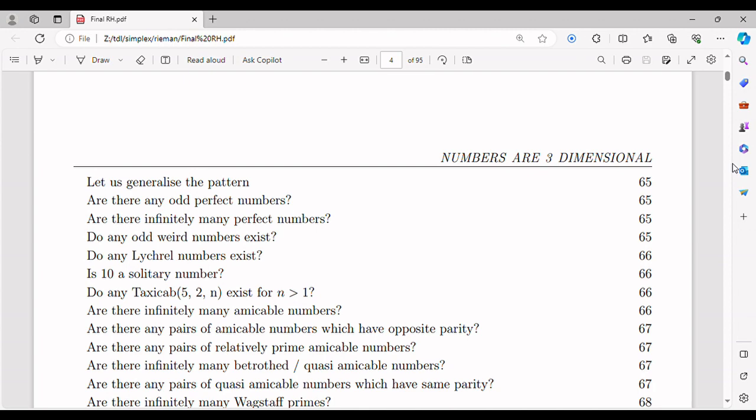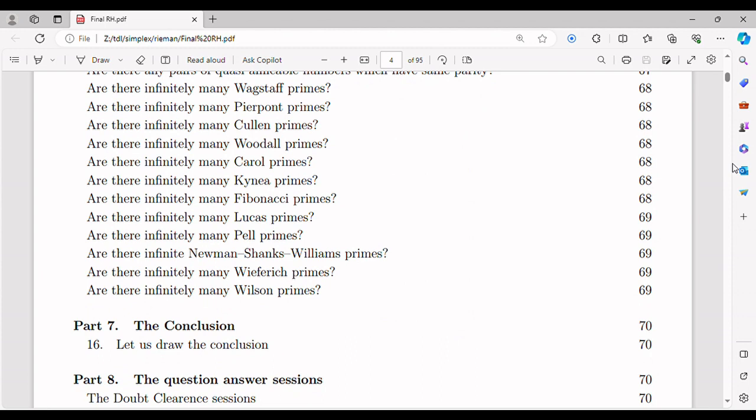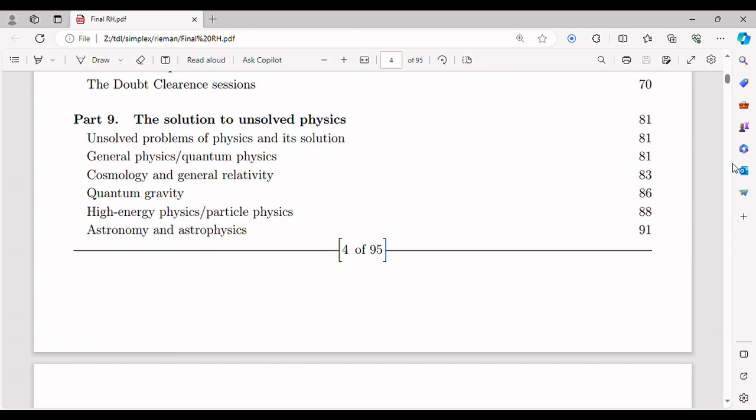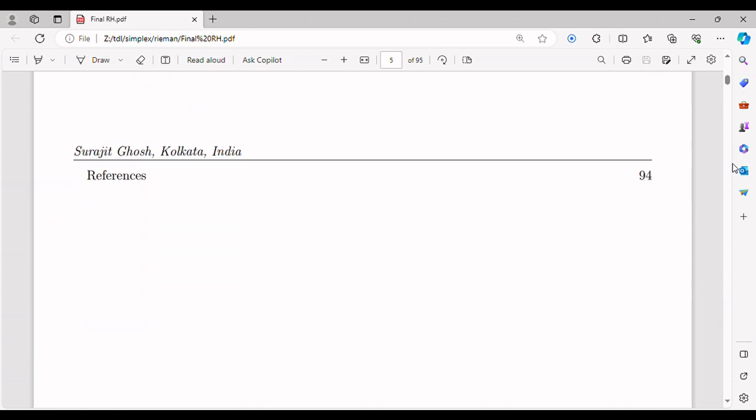Before we delve into extending the domain of the Riemann Hypothesis and my journey of proving the hypothesis, let's first understand what the hypothesis is all about. The Riemann Hypothesis is a conjecture proposed by the German mathematician Bernard Riemann in 1859. It deals with the distribution of prime numbers and their connection to the zeros of the Riemann zeta function.